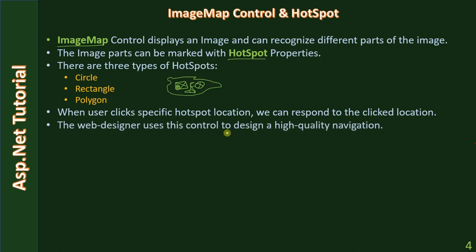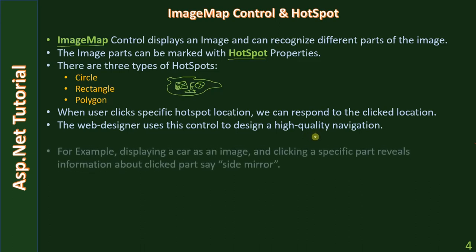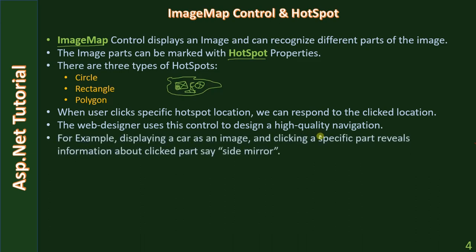The web designer uses this control to design high-quality navigation. For example, displaying a car as an image and clicking a specific part reveals information about that part. If in a full car image the user clicks the side mirror, by using the hotspot you will know that the user clicked the side mirror and you can take the necessary action.